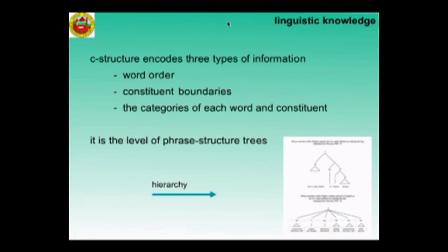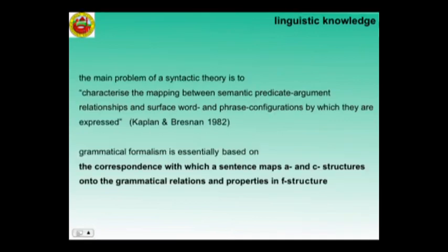The third structure of interest is the C structure, which encodes three types of information: the word order, the constituent boundaries, and the categories of each word and constituent. And again, there is a hierarchy — first position obviously, and then the other positions follow.